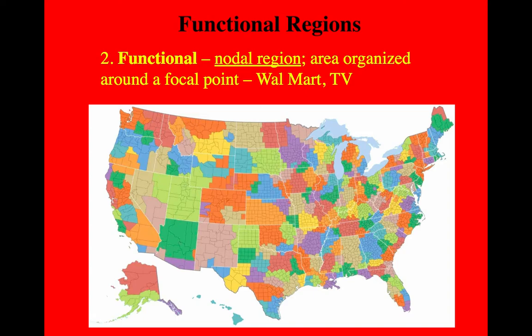Functional regions will give you guys a little bit more trouble first quarter. Sometimes the AP calls it a nodal region. That's because you start from a central or focal point and everything spreads out from there. The best example is Walmart or a TV station. The map you're looking at is a TV station map — the TV stations are in Salt Lake, that's the node or focal point, and everything spreads out from there. The shopping area for our particular Walmart in Park City is the node, and the people that go to that Walmart are within that functional region. This is where distance decay plays a role — the further you get away from that Walmart, the less likely you are to use it. You might be getting closer to Heber, so that becomes your functional region with a Walmart down in Heber, and you'll go there instead.